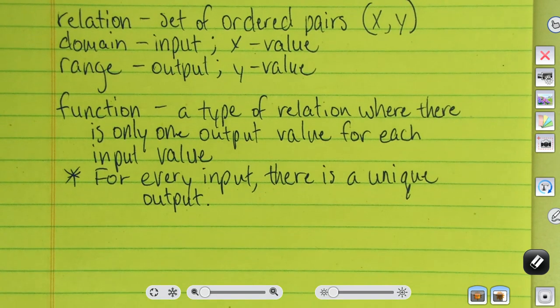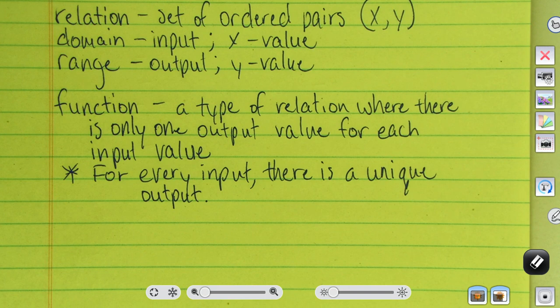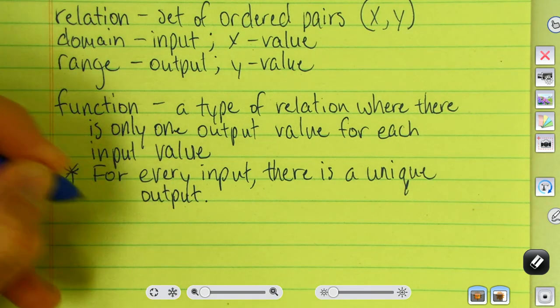We can write relations as graphs, equations, tables, or mappings. But if they're graphs, we can use a vertical line test.